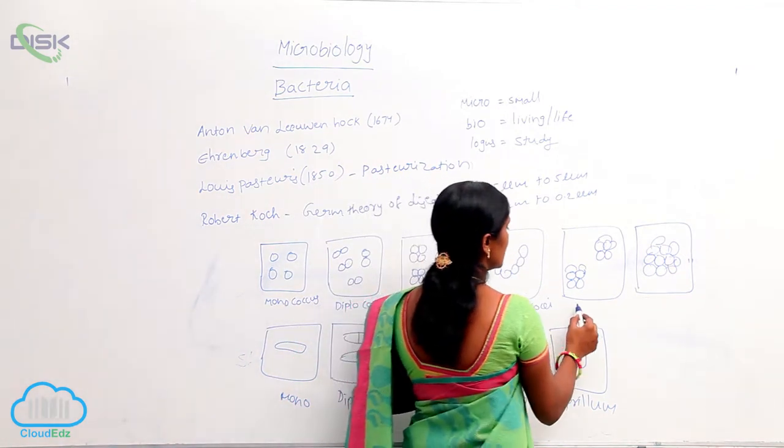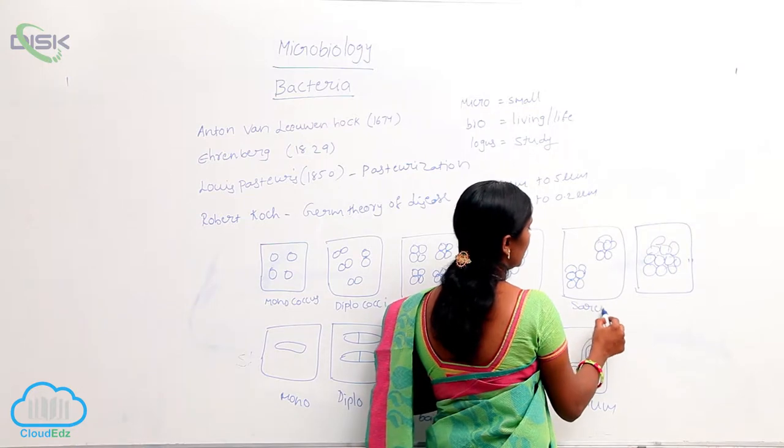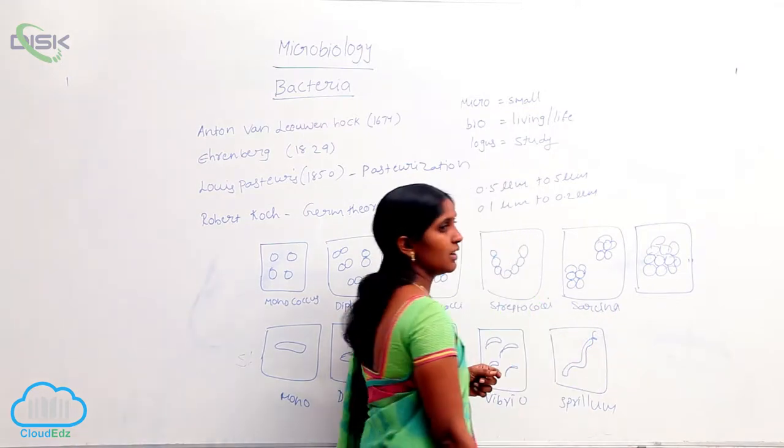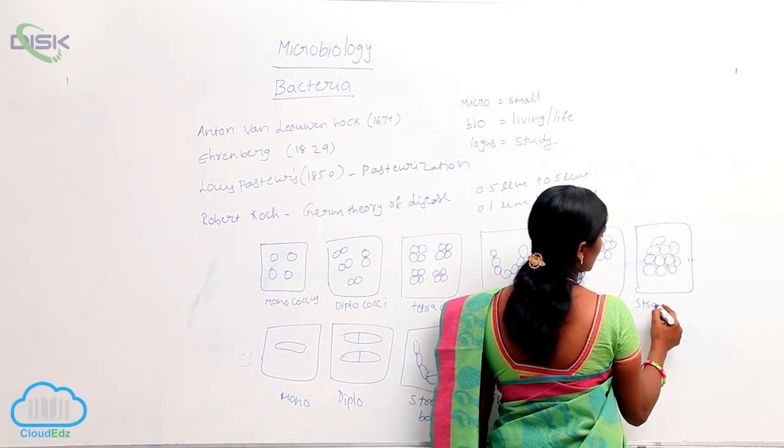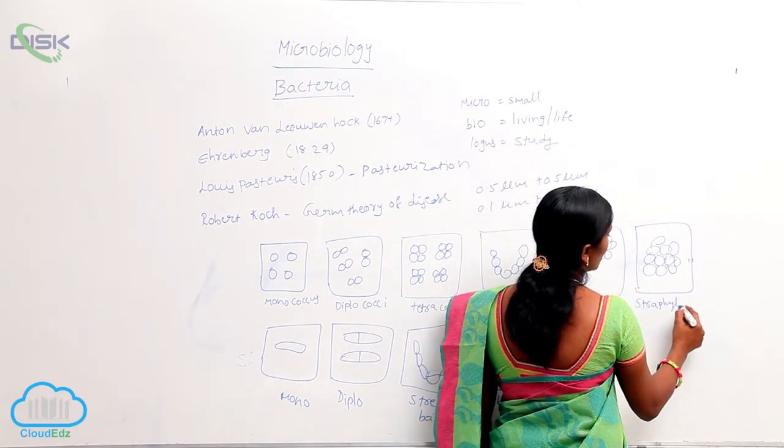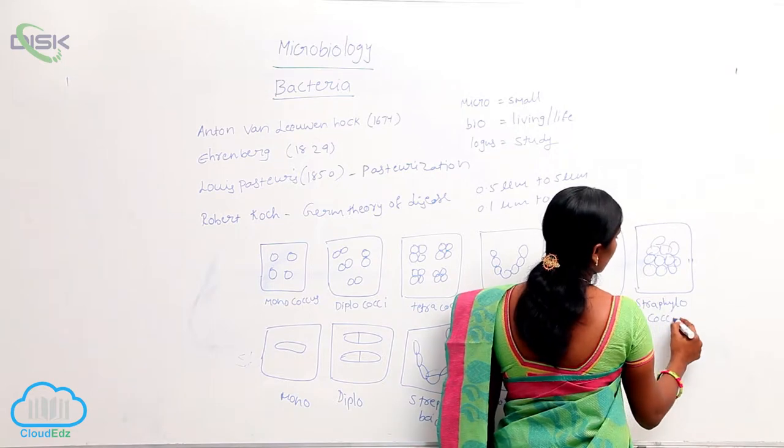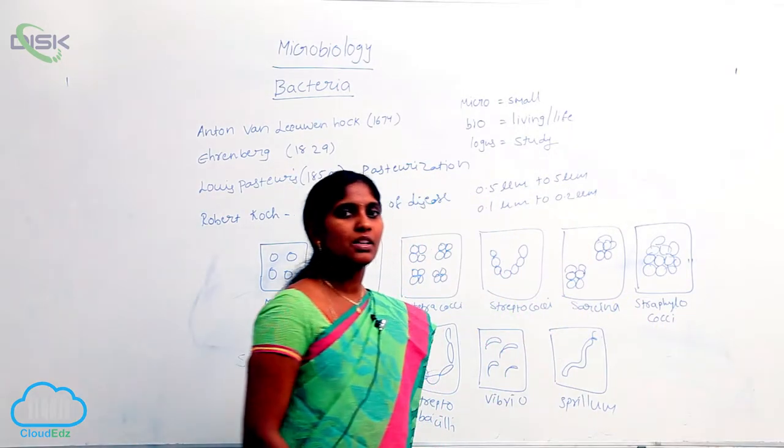Sarcina has a cubical shape, where the bacterial cells are arranged in a cubic pattern. Staphylococci means the cells are arranged in an irregular pattern.